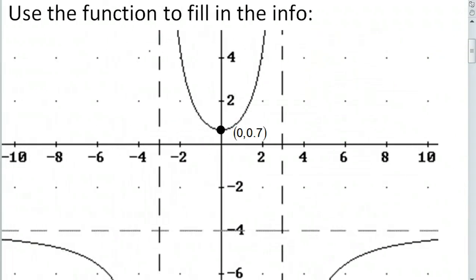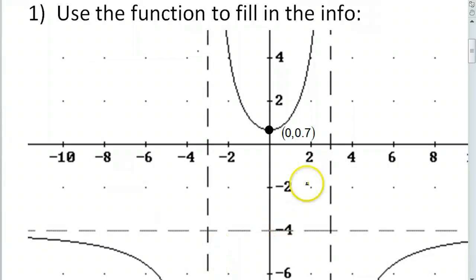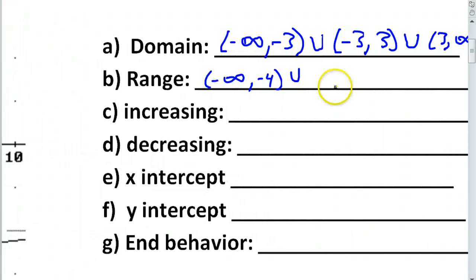Okay. Now, notice that then there's a gap here in the middle before we get to that upper branch. Okay, and I gave you this little point here to help you out, so you wouldn't have to just be guessing. So, what's the range of the upper branch? 0.7 to infinity. 0.7 to infinity. Go with the y value there. So, 0.7 to infinity. Any questions on the range?